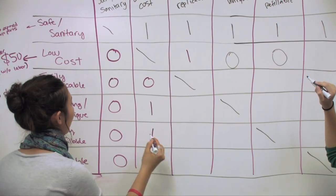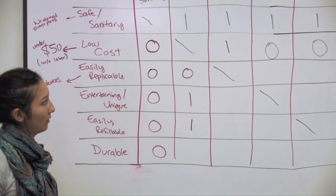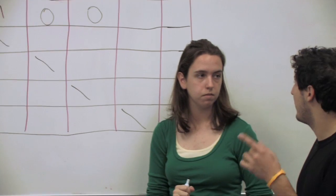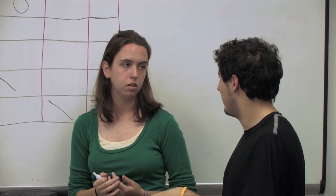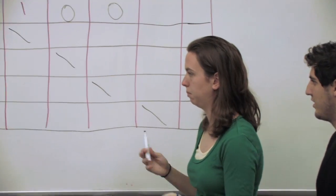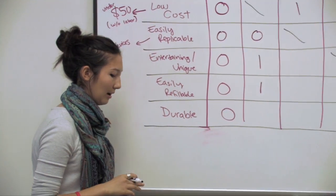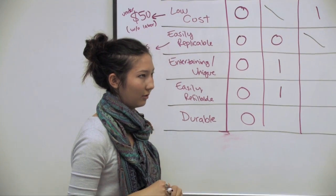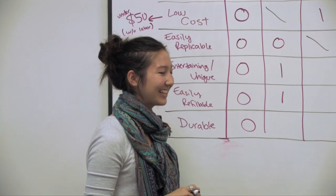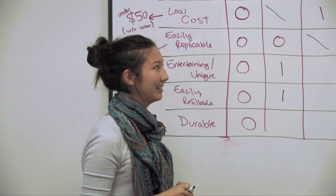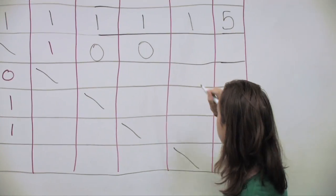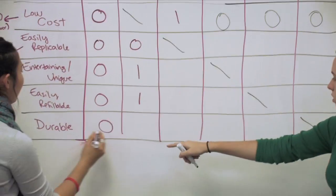And durable versus low cost. Well durable, if it's really durable it can save them money in the end because they don't have to pay the fee once. So I feel like low cost is less important than durable. I think also for durability they were saying that it has to withstand 300 uses per day for five years. Which is quite a bit of traffic. So I think we definitely need to focus on that to save them money in the long run.